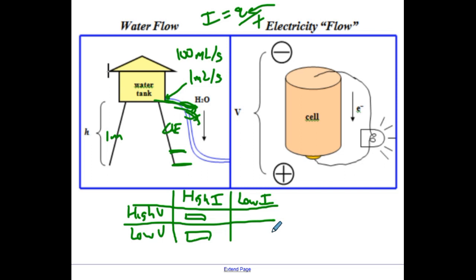To summarize: if you have lots of particles moving, you have more current. But if they're gaining higher speeds, you have more voltage.